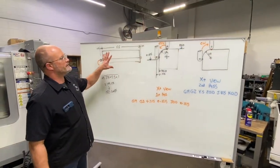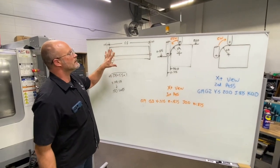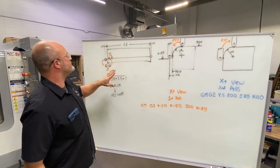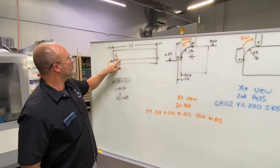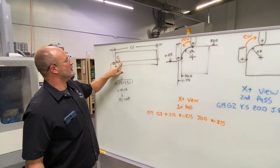All right, so I have a couple of different sketches on the board here just to kind of illustrate the process that we're going to go through. This is looking at the top view of our part right here and here's our radius that we're going to be machining.